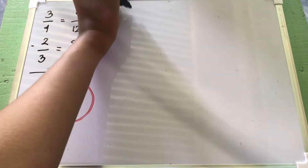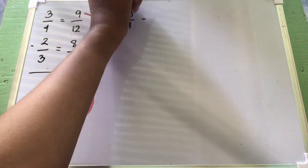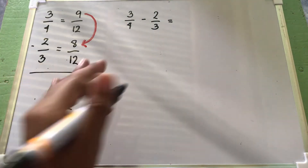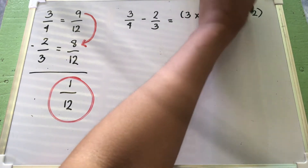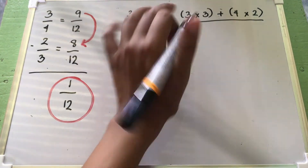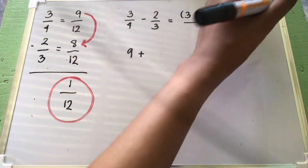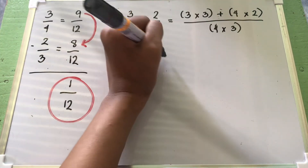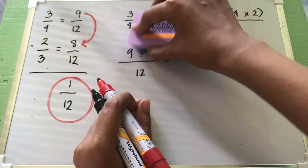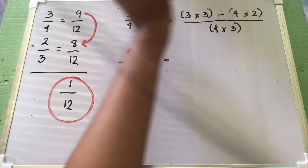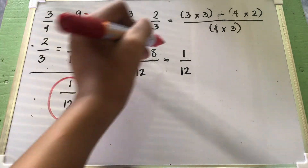Now let's try another way of solving: 3 fourths minus 2 thirds using cross multiplication. We have 3 times 3 minus 4 times 2, over 4 times 3. Solving: 3 times 3 equals 9, and 4 times 2 equals 8. So 9 minus 8 equals 1 over 12. The final answer is also 1 twelfth. Either solution can be used.